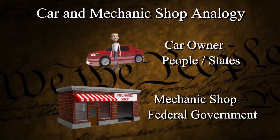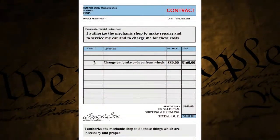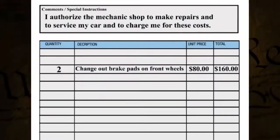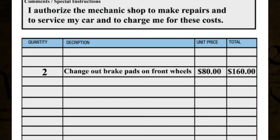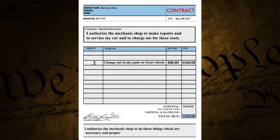We're going to start with the analogy of the car and mechanic shop. People and states are represented by the car owner, and the federal government is represented by the mechanic shop. Just like last time, you set up a contract — none of this funny business. I don't want you to change my car to a Ferrari. The contract says: change out the brake pads on the front wheels. You sign the contract, take your copy, he takes his.